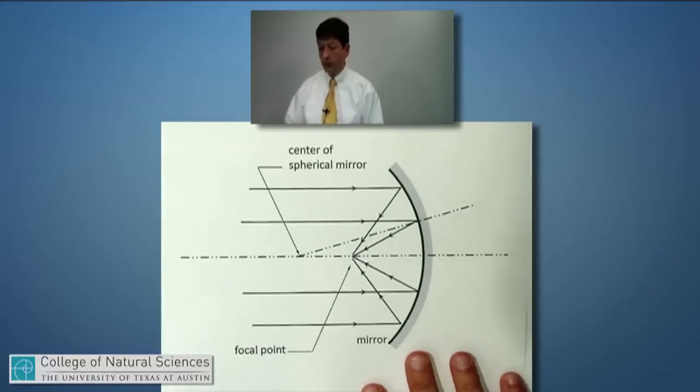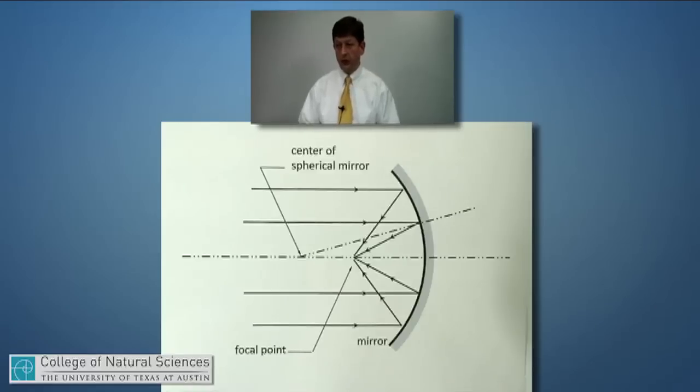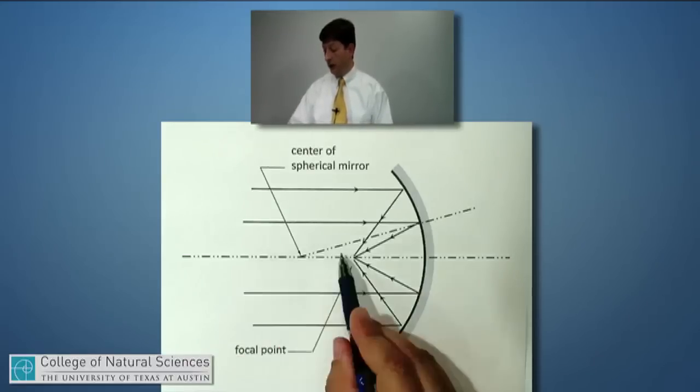As we move forward and start to do some of those calculations, it will be important to develop another concept of a mirror, and that's called its focal point. The focal point, much like the word suggests, is where light tends to be focused to. For a curved mirror, it's defined as where does the light converge to if you have parallel light rays heading into the mirror. By parallel, I mean a series of light rays all traveling in the same direction.